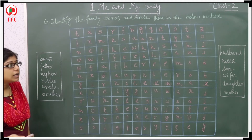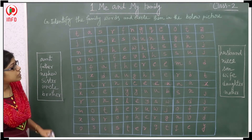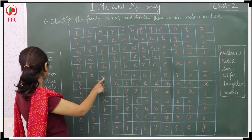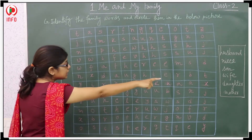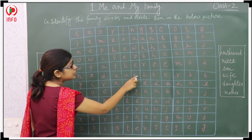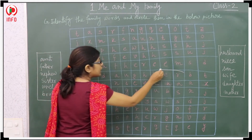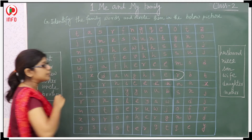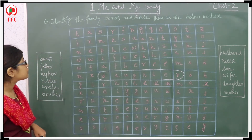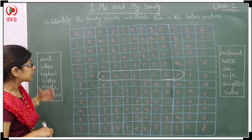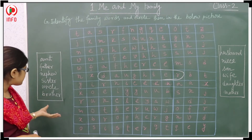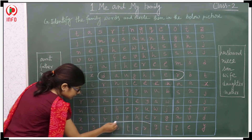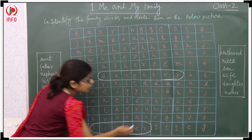So how is it possible? I am helping you to find out the first one. See here — D-A-U-G-H-T-E-R — so here I got the word daughter, and I have circled it. Next one I have to find the others also. See here: sister — S-I-S-T-E-R — I got sister also.